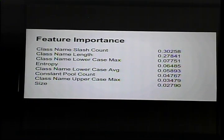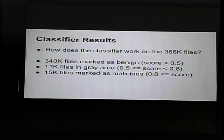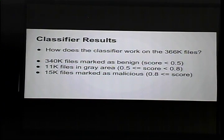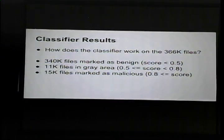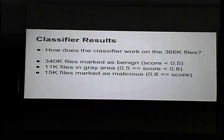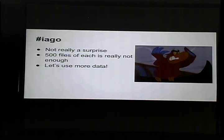That's good and bad — good because we get good results, but bad because we may be overly reliant on one particular feature. If an attacker changes their behavior on that field, our great classifier becomes useless. Running it on all 366,000 files: 340,000 were marked as clean, 11,000 in a gray area where 50–80% of trees marked it malicious, and 15,000 were flagged as malicious. That's fairly disappointing — I don't think 15,000 of those files were actually malicious. We started with only 500 of each, which really isn't enough data.